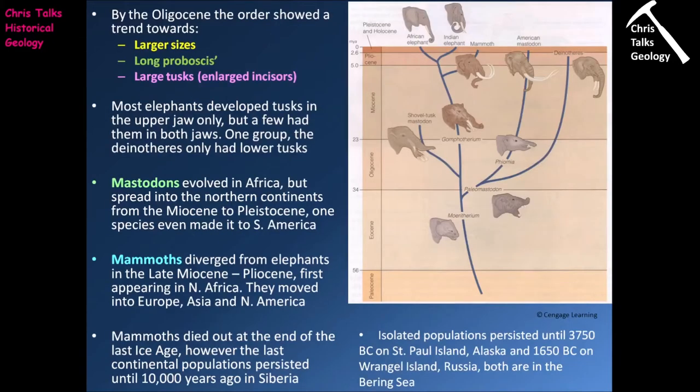As we transition into the Oligocene, the order Proboscidia begins to show the following trends: a shift towards larger body sizes, a shift towards longer proboscises, and a shift towards larger tusks. The tusks are actually incisors, which means they're technically teeth.